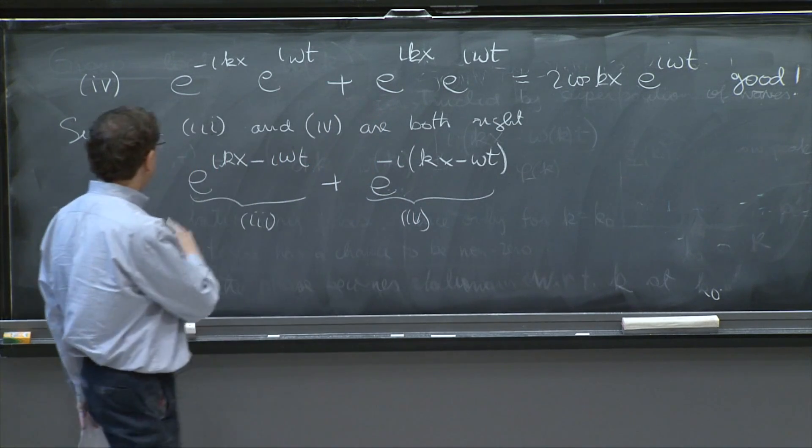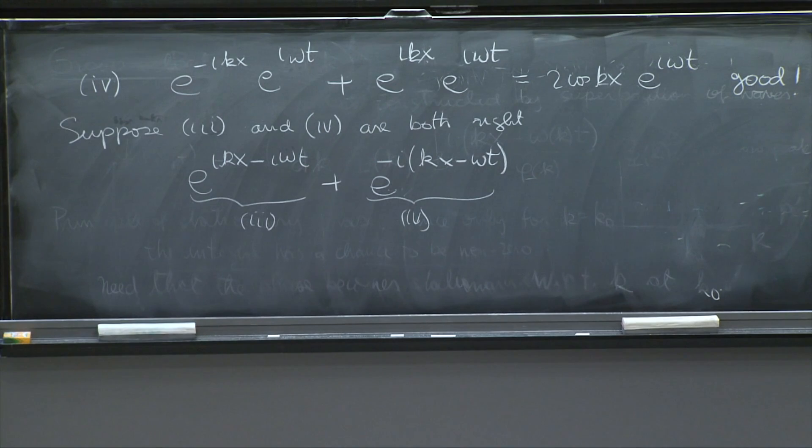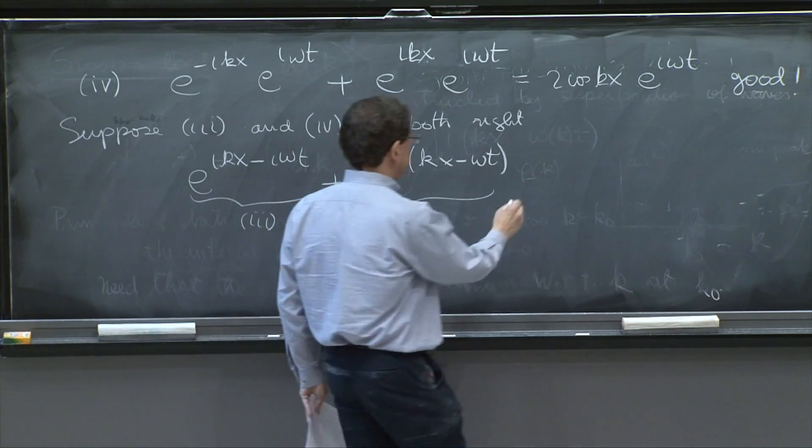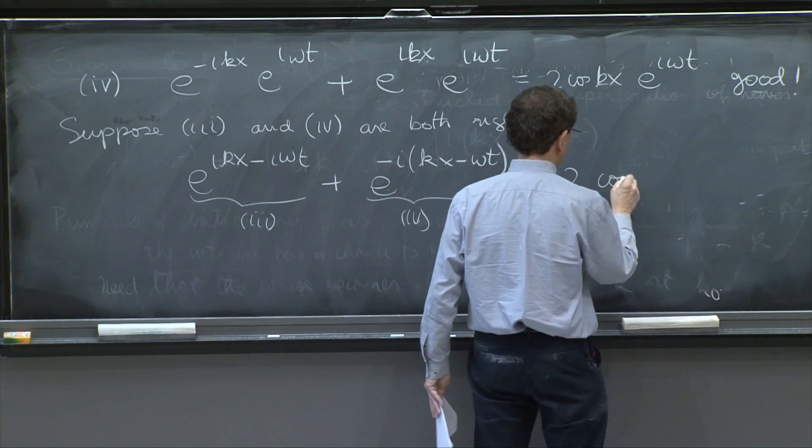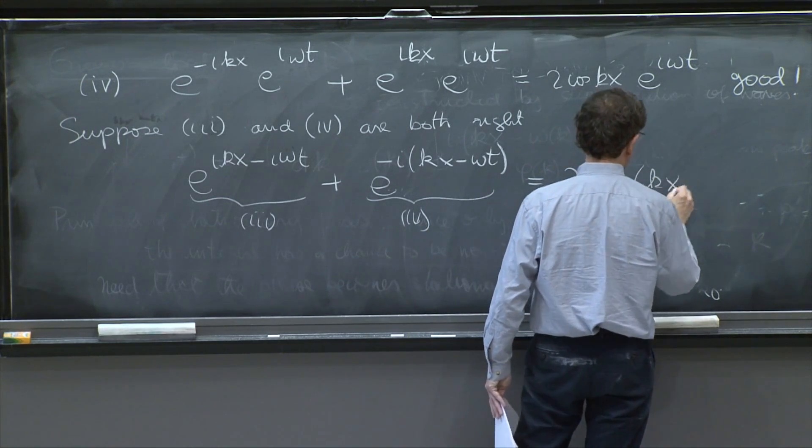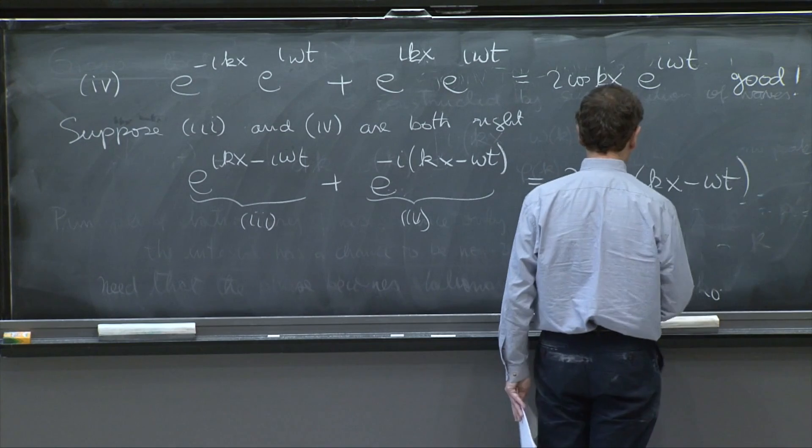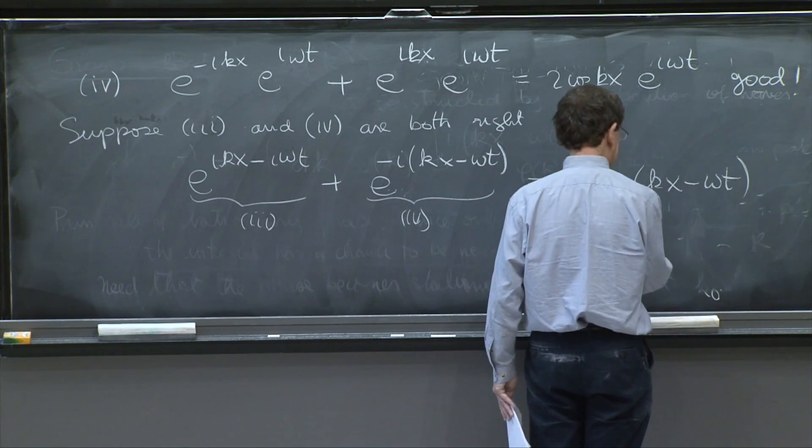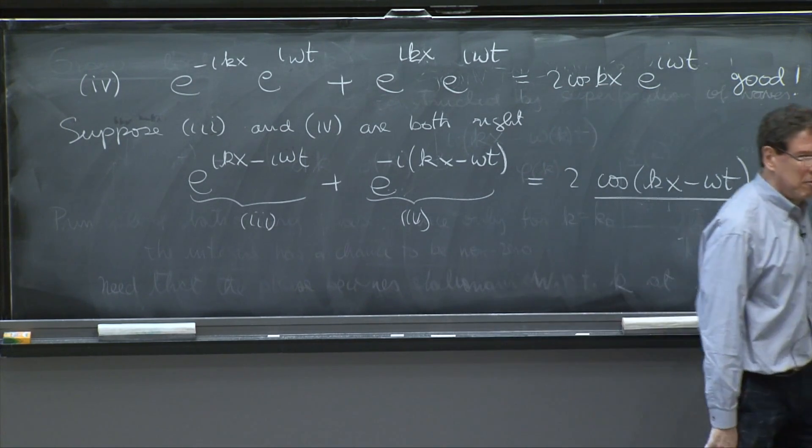And that should still represent this same particle moving to the right. But this thing is twice cosine of kx minus omega t.